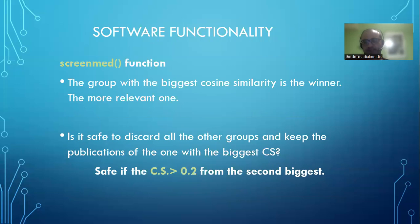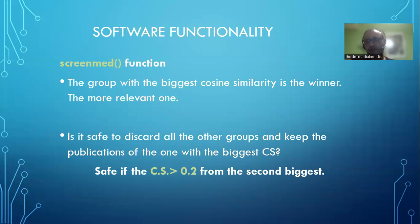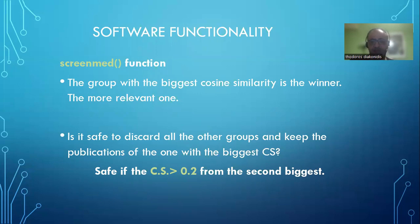What does the screen meta function actually do? The output is a cosine similarity score per group. If you have, for example, two or three groups, you get two or three numbers between zero and one. The group with the biggest cosine similarity is the winner — it is the most relevant group of publications. The question is whether it is safe to discard all other groups and keep only the one with the biggest cosine similarity.